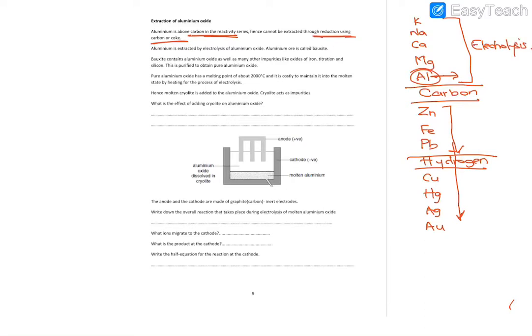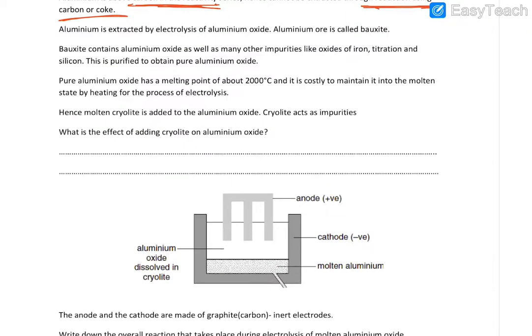Now to obtain aluminum, we use the aluminum ore called bauxite. Bauxite contains aluminum oxide, including impurities. And in order to have pure aluminum oxide, bauxite is going to be purified.